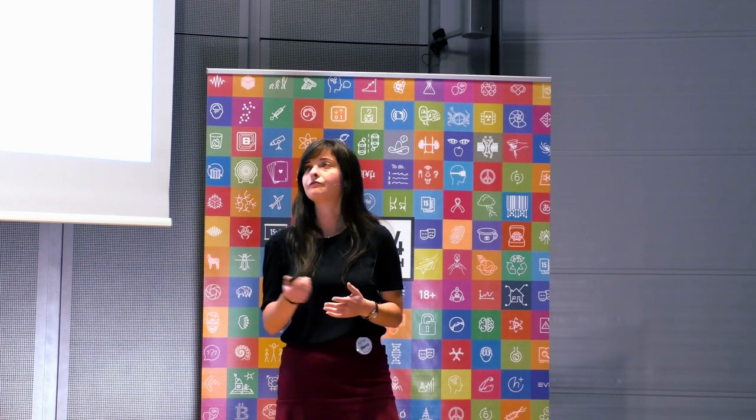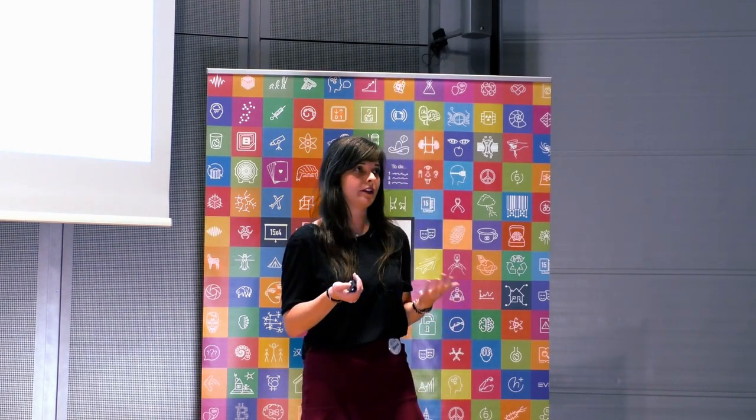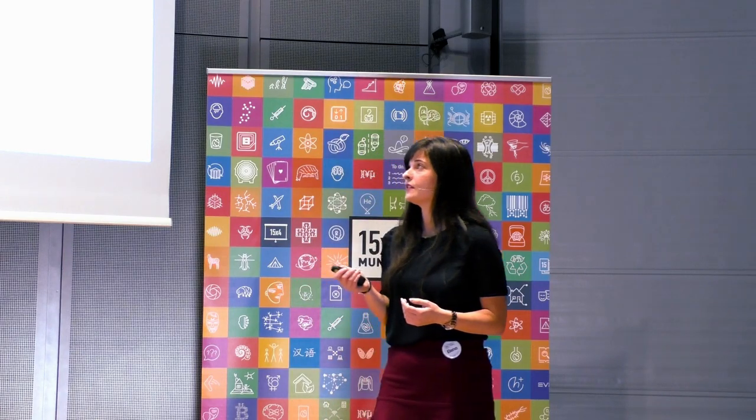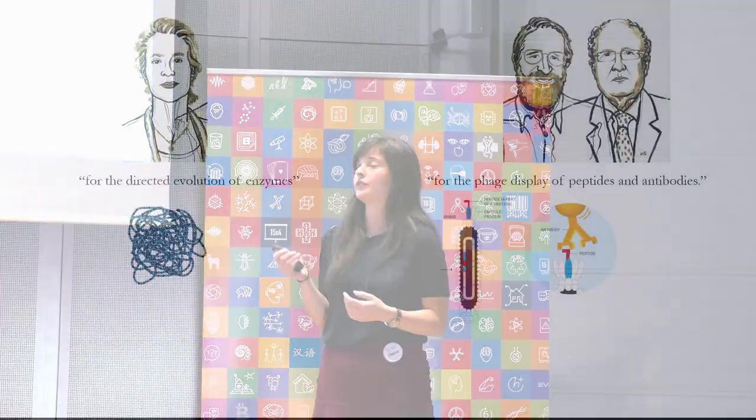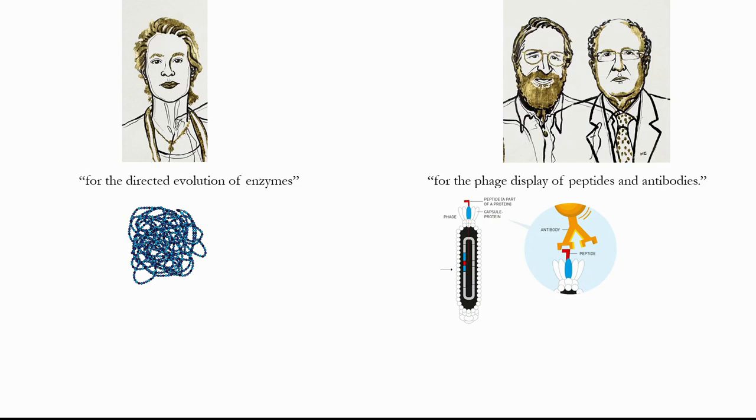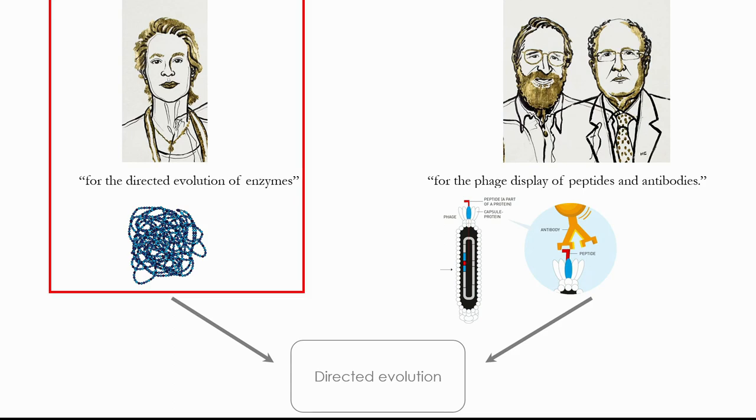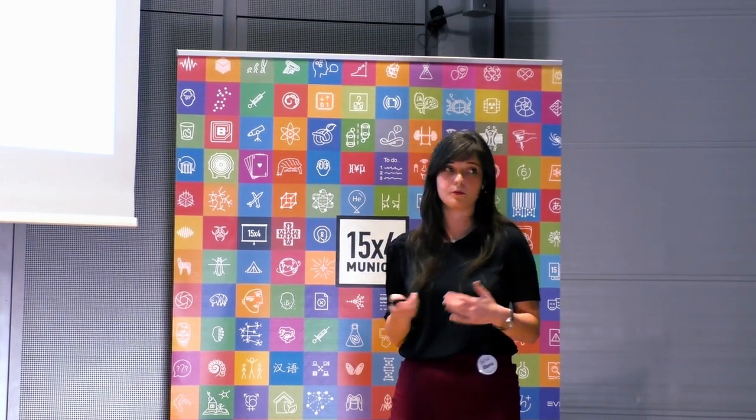The first one is for the Directed Evolution of Enzymes and the second one for the phage display of peptides and antibodies. Probably some of you when reading about this prize were a little puzzled by the fact that they're awarding one Nobel Prize for two researches that apparently don't even have a word in common. This is not entirely true, and these two researches are going together because both of them are founded on a very basic concept which is Directed Evolution.